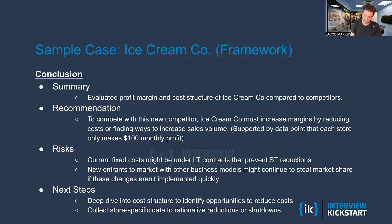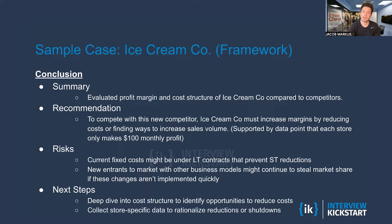Next steps — always helpful to call out: let's deep dive the cost structure, see what is controllable, which costs we can reduce and what those opportunities are. Let's collect store-specific data to understand and justify which locations we should potentially shut down. That's shooting for about a minute or two in the summary — you don't have to cover everything, but hopefully making a compact, concise summary of the full case and coming to the conclusion that the hypothesis around revenue was actually not the right direction; we had to focus on costs. That was an ice cream case — we'll do a couple of different industries, so thanks for sticking with me and I'll see you in the next lesson.